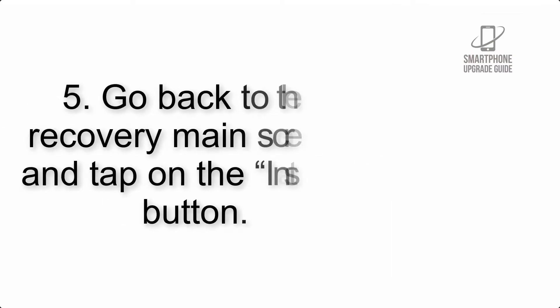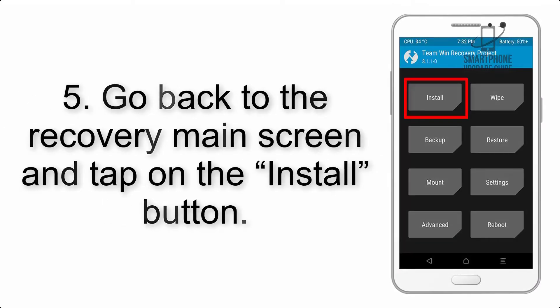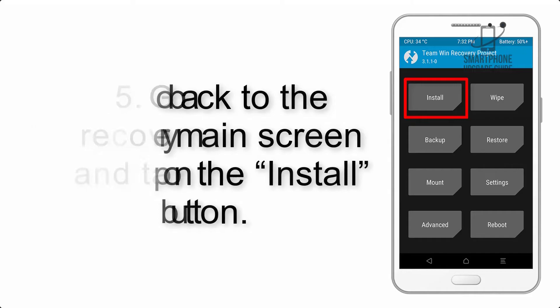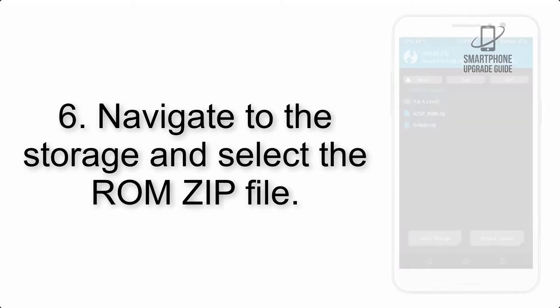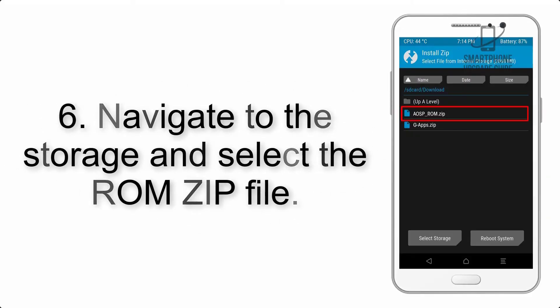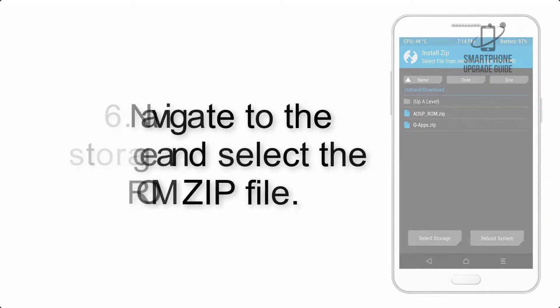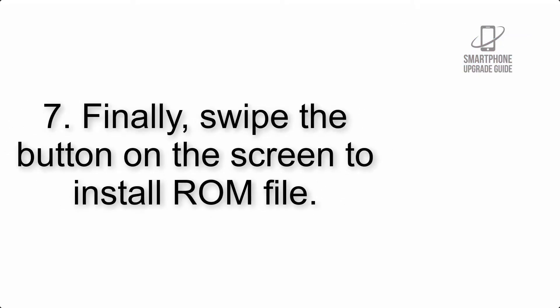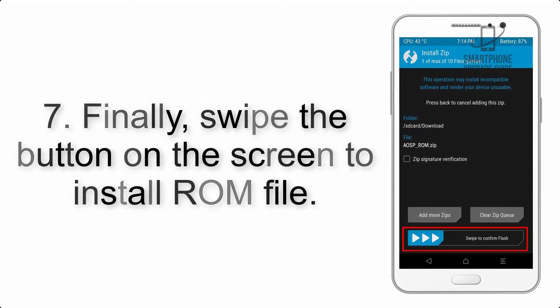Step 5: Go back to the recovery main screen and tap on the Install button. Step 6: Navigate to the storage and select the ROM zip file. Step 7: Finally, swipe the button on the screen to install the ROM file.